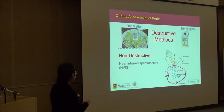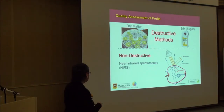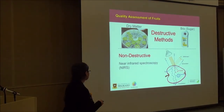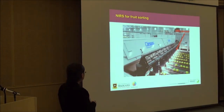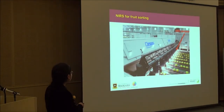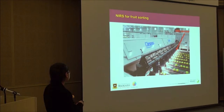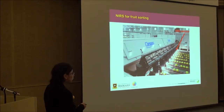Here comes near-infrared spectroscopy, which is the non-destructive method. How does it work? We have a source, and the light penetrates into the fruit — it can be transmitted, it can interact with the fruit and come back (interactance), or it is reflected off the surface (reflectance). Near-infrared spectroscopy has also been used for fruit sorting in large commercial grading machines with NIR sensors sorting fruit according to sweetness and taste.